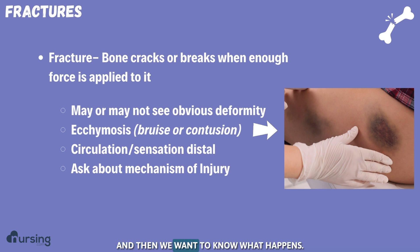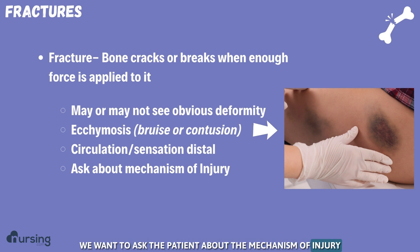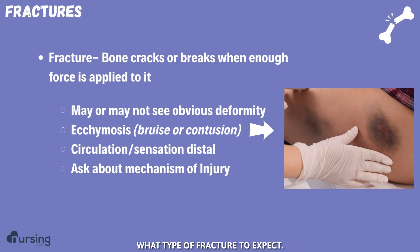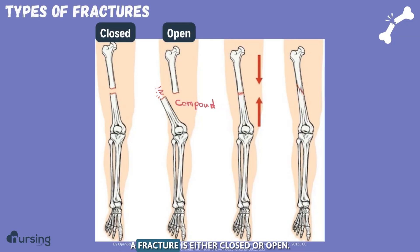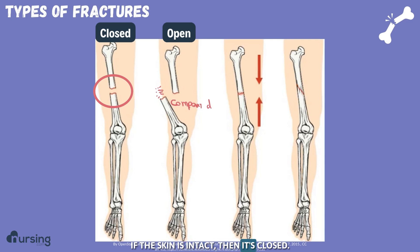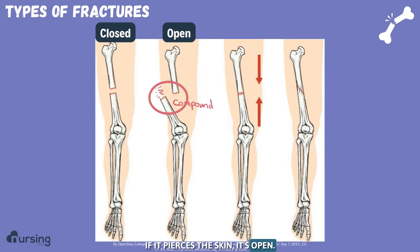We want to ask the patient about the mechanism of injury because it helps us understand what type of fracture to expect. A fracture is either closed or open. If the skin is intact, then it's closed. If it pierces the skin, it's open, also called a compound fracture.